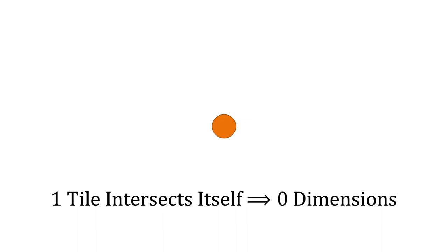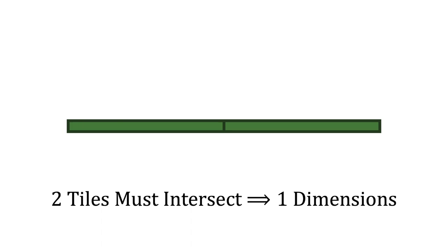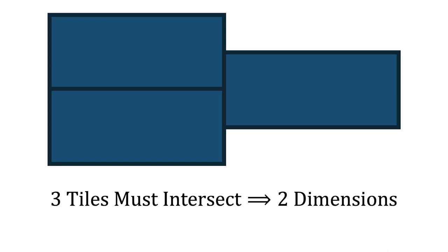It seems that on a line segment, if I use small enough segments, two of them will intersect at some point no matter what I do. Hence, the dimension of a line segment should be one. Finally, for a plane, if we use small enough bricks, as we saw earlier, then three of them should intersect somewhere. So it seems that the Lebesgue covering dimension does match our intuition of what dimension ought to be.